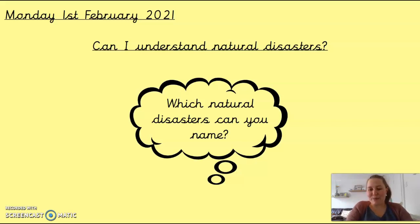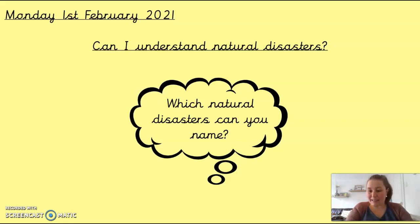Hi Essex and welcome to Monday's Geography Lesson. Today we are going to look at natural disasters. Last week we were looking at volcanoes, and a volcanic eruption is something that can cause a lot of damage and happens naturally, so it can be classed as a natural disaster.